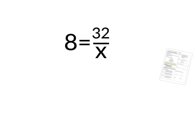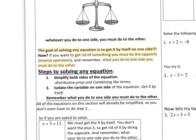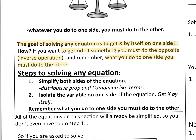Let's think of our notes from this section. The goal of solving any equation is to get x by itself — to isolate the variable on one side. How do you do that? To get rid of something, you must do the opposite: the inverse operation. And remember, what you do to one side you must do to the other.